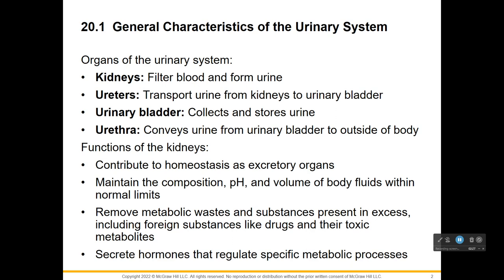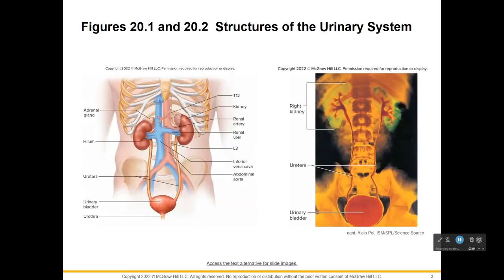The urethra takes urine from the bladder and expels it outside of the body. The kidneys actually do a lot. They contribute to homeostasis, maintaining the composition, pH, and volume of your body fluids at homeostatic levels. The kidneys remove metabolic wastes and get rid of drugs and toxins, and they secrete hormones that help specific metabolic processes. Here you see the kidneys with the adrenal glands sitting on top, and the ureters leading to the urinary bladder, then the urethra.